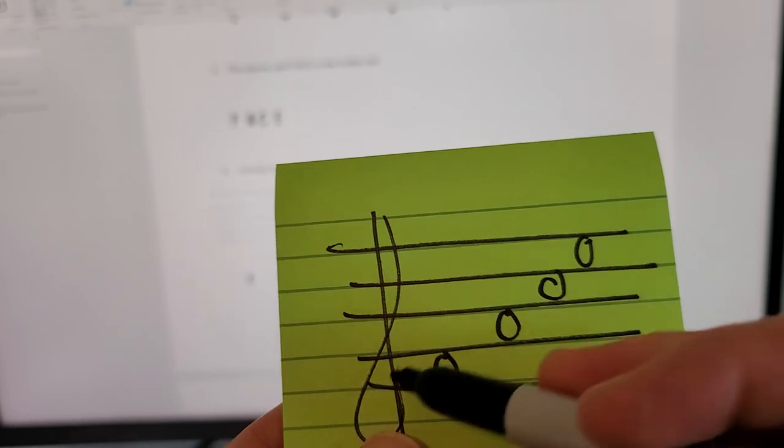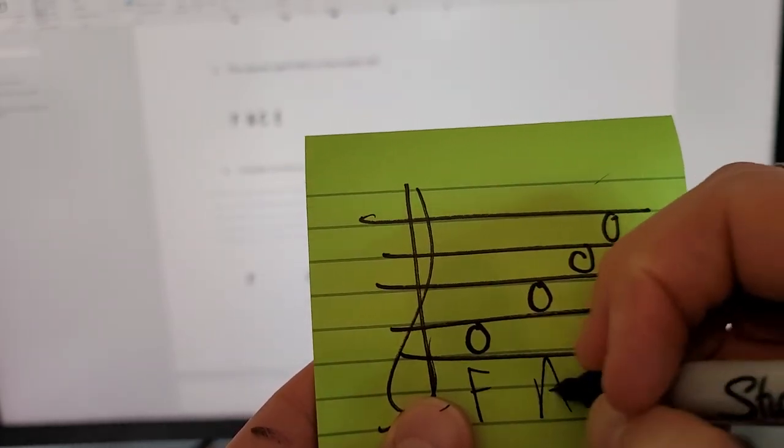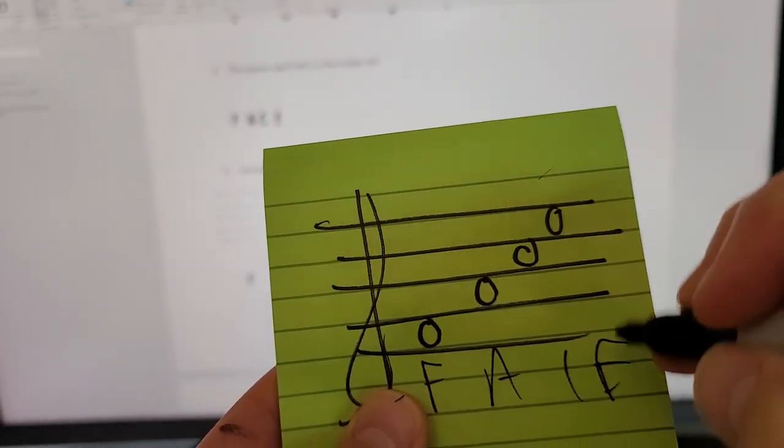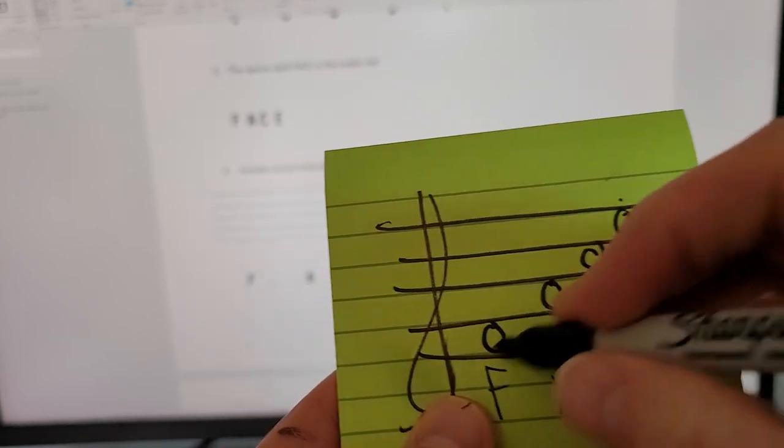And we always start from the bottom up. So that would be F, A, C, E. There's our E. There's our C. There's our A. There's our F.